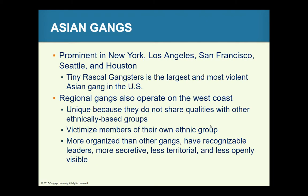Asian gangs are prominent in New York, Los Angeles, San Francisco, Seattle, and Houston. Some known Asian gangs include the Wa Ching, Joe Boys, the Yu Lee, and the Tiny Rascals. They are more organized than other gangs, with definite leaders, less territorial, and much less openly visual.